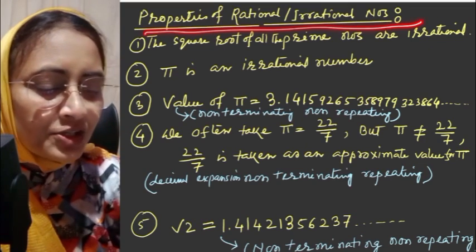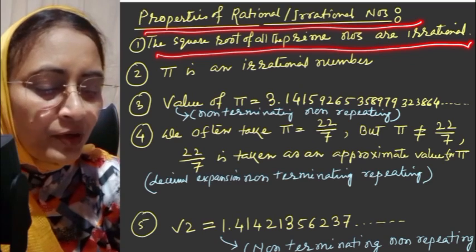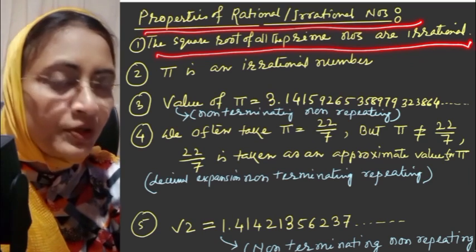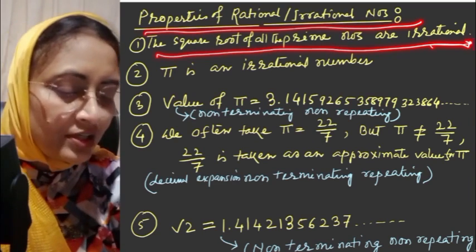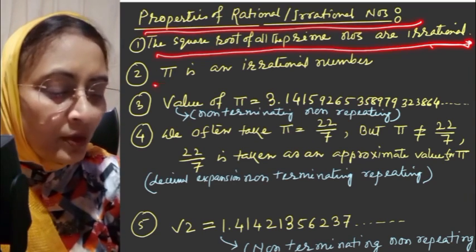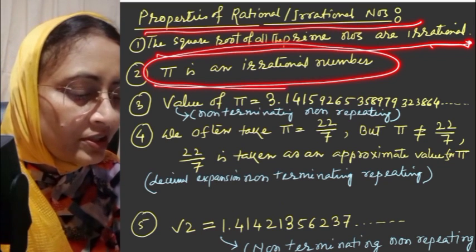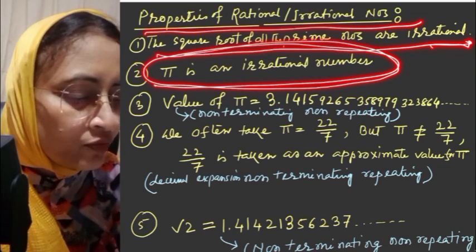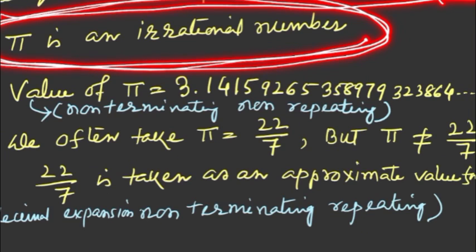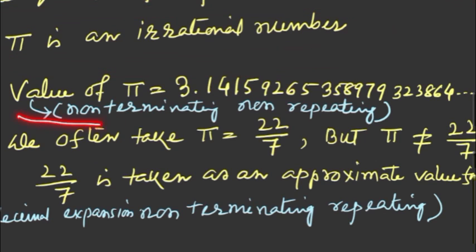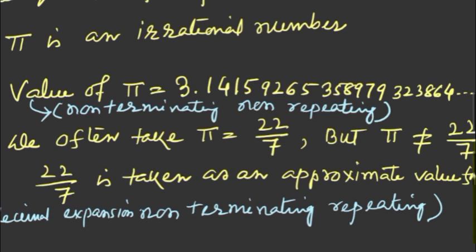Pi is an irrational number — this is very important. Pi is non-terminating and non-repeating. Its decimal expansion is 3.14159... and it never terminates and never repeats. We often use pi approximately equal to 22 by 7, but 22 by 7 is not exactly equal to pi.